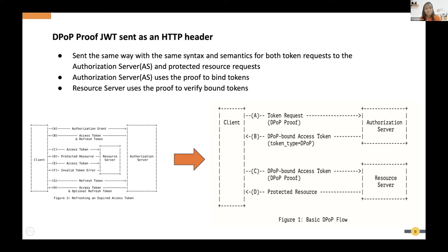Upon validation, the authorization server issues an access token, and this access token is special — it is bound to the DPoP or the public key of that particular user. Whenever someone presents that access token to get a resource, the resource server can check with the authorization server whether the requesting client is the correct owner. The token type 'DPoP' indicates that this access token is bound to the client's public key.